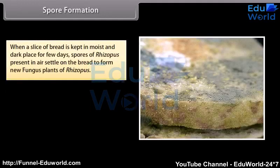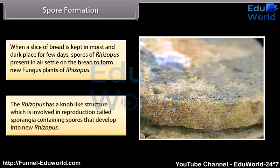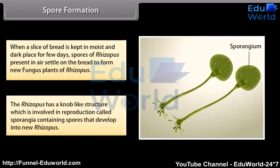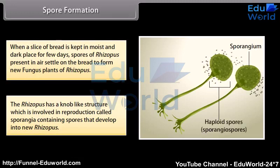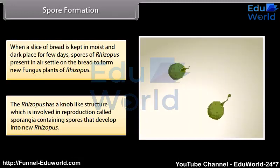When a slice of bread is kept in a moist and dark place for a few days, spores of rhizopus present in the air settle on the bread to form new fungus plants of rhizopus. Rhizopus has a knob-like structure called sporangia, which is involved in reproduction, containing spores that develop into new rhizopus plants.